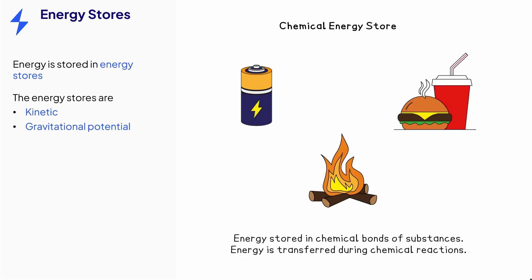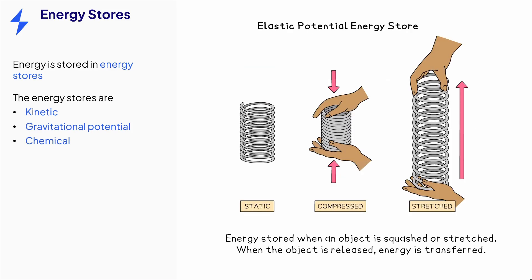Energy is stored in the chemical bonds of substances. When chemical reactions occur, energy is transferred to or away from the chemical energy store of the system. When an object is squashed or stretched — sometimes also called strain energy — energy is transferred to its elastic potential store. When the object is released, energy is transferred away from the object.